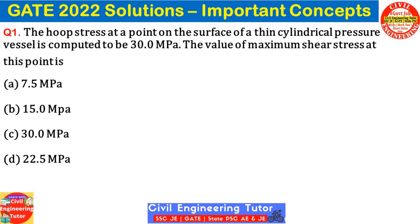Here is question number one: the hoop stress at a point on the surface of a thin cylindrical pressure vessel is computed to be 30 MPa. The value of maximum shear stress at this point is? So the question is regarding hoop stress. Those who have already studied hoop stress must be knowing the formula. The general formula for hoop stress is PD by 2t. However, in this case, we do not need this formula.